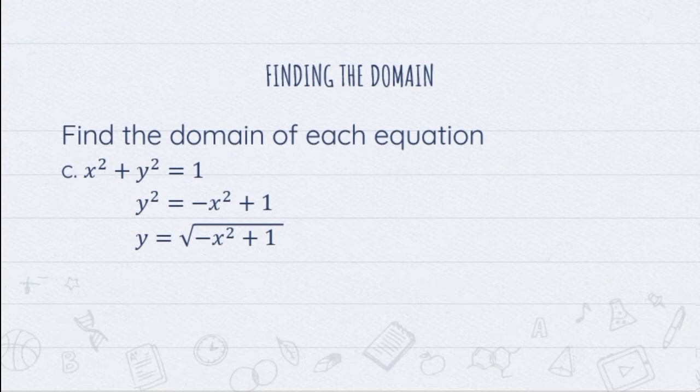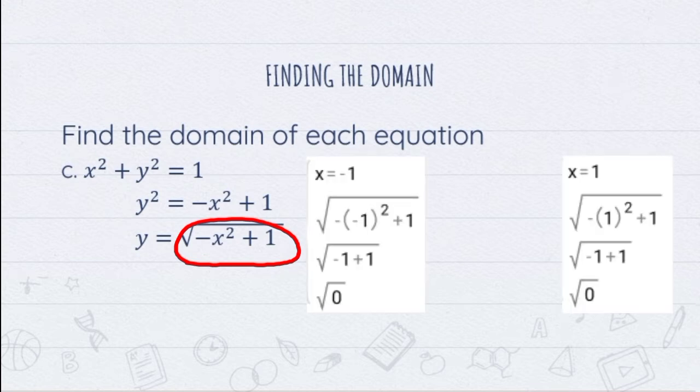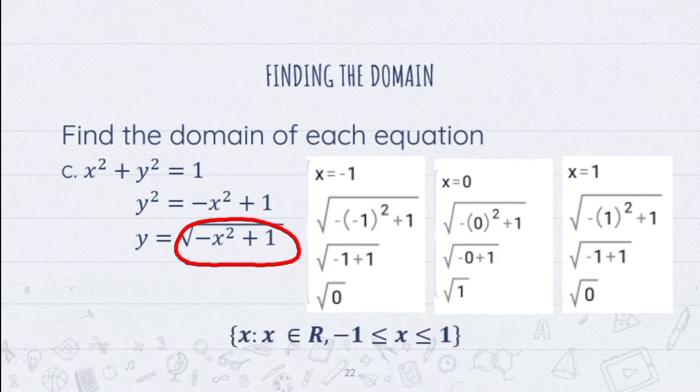To get the domain of a radical function, we have to take note of the value of the radicand, that is what's inside the radical sign. The radicand must be greater than or equal to 0 or else our answer will be imaginary. Substituting 1 or negative 1 in our x will give us a radicand of 0, while substituting 0 in our x will give us a radicand of 1.